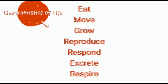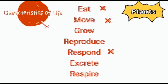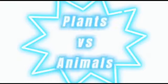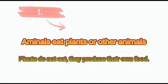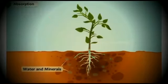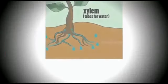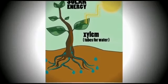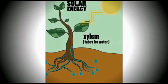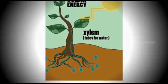These processes of life differentiate plants from animals. Like eating — plants do not typically eat or drink; they absorb water from the soil and make their own food with the help of solar energy.